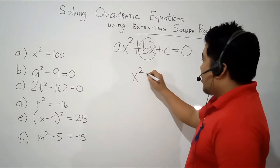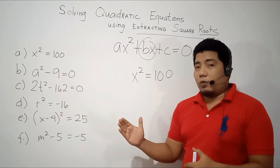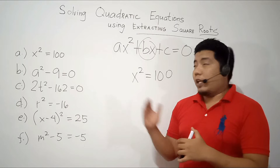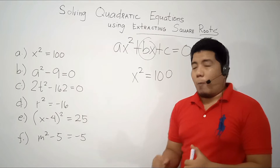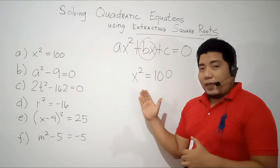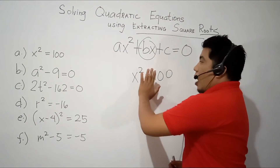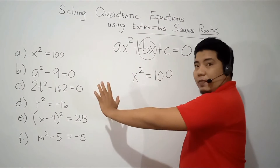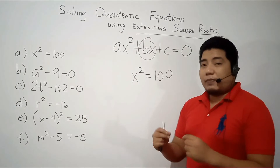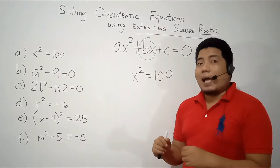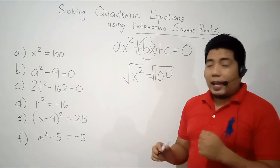Let's start with x² = 100. In solving quadratic equations using extracting square roots, we don't need to arrange our equation into standard form because our aim is to get the value of x. In terms of solving for x, we need to isolate x. As we can see in this example, our x is already isolated on the left side and our 100, the constant term, is already on the right side. It's very simple to apply extracting square root here — you just square root both sides of the equation, and the square root of x² is x.